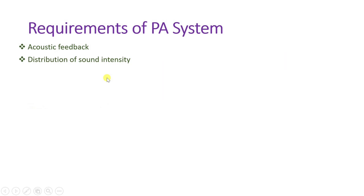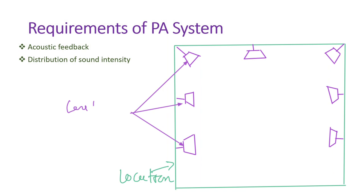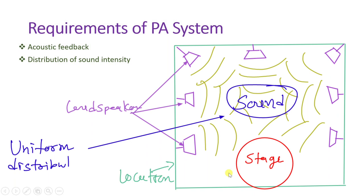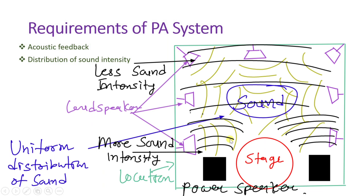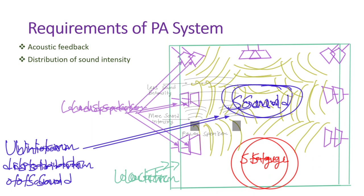The second requirement is uniform distribution of sound intensity. In any public address system, sound intensity should be uniform across the entire area. For example in a seminar hall, sound distribution should be uniform for all audience members. Using a single speaker creates high intensity near the front and low intensity at the back; using multiple distributed speakers provides proper, uniform sound intensity throughout.